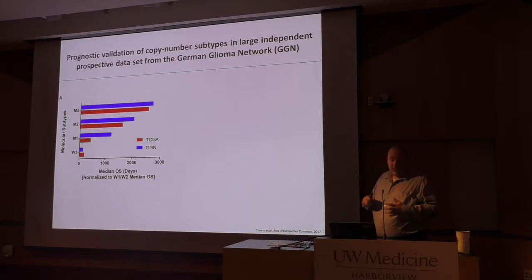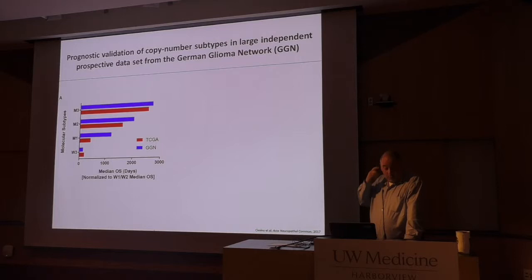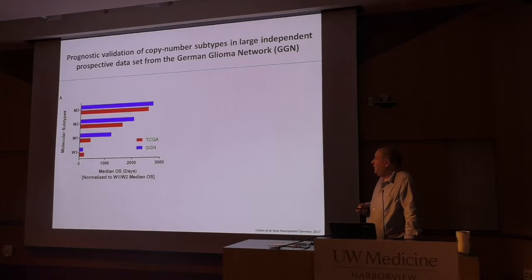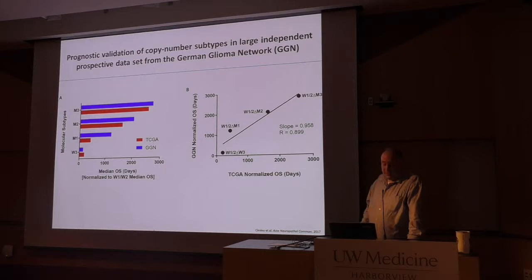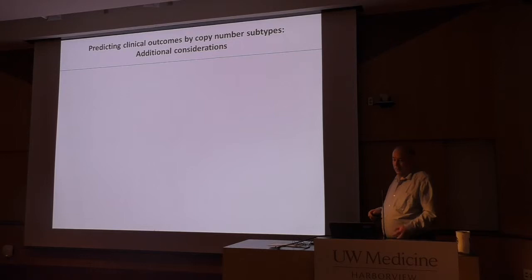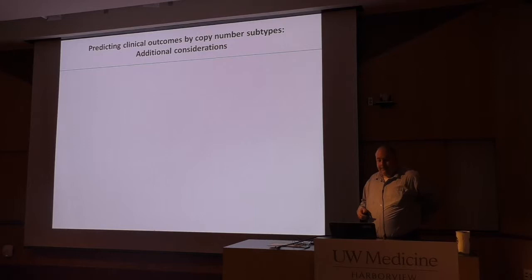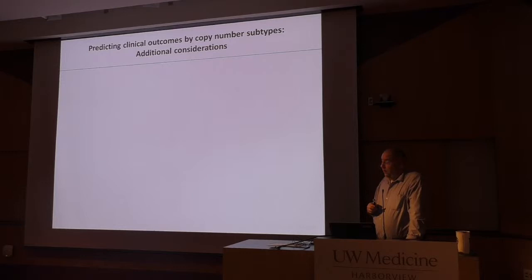Originally defined in the TCGA data set, we wanted to validate this in an orthogonal way. We looked at a large data set with copy number data available, collaborating with groups from Heidelberg and Switzerland to access over 250 profiled tumors in the German Glioma Network. Using different platforms — looking across both populations and molecular platforms — when we do a linear regression it's nearly a one-to-one correlation, validating the prognostic findings from the TCGA discovery data set.